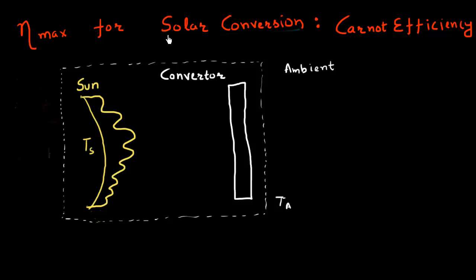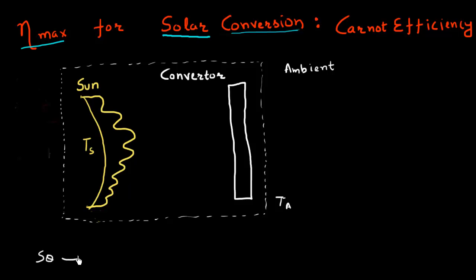Since the very early days of solar cells, people have always pondered upon the question: what is the maximum efficiency you can get for solar energy conversion? Previously I was mentioning this Shockley-Queisser limit, which gives a maximum ceiling of energy conversion of around 32% if you have a single junction solar cell.